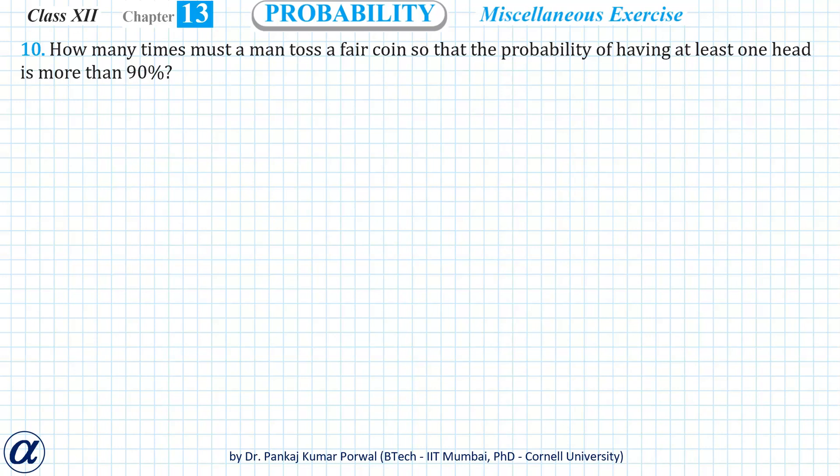In this question, we are asked: how many times must a man toss a fair coin so that the probability of having at least one head is more than 90%?